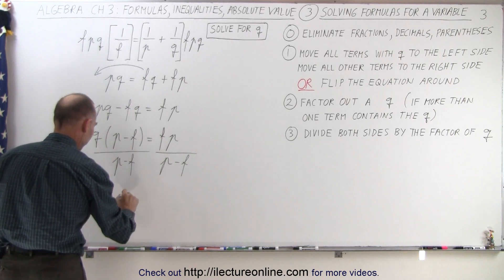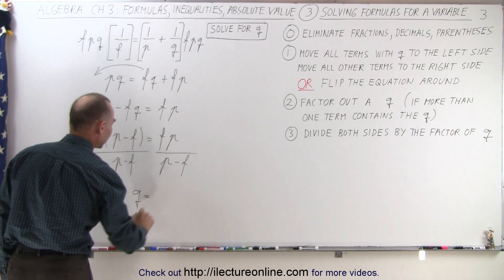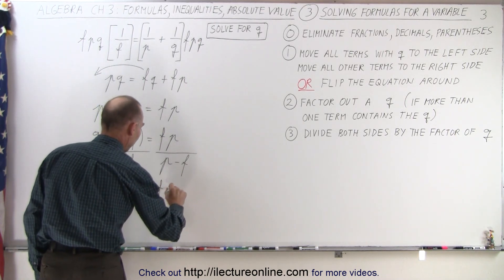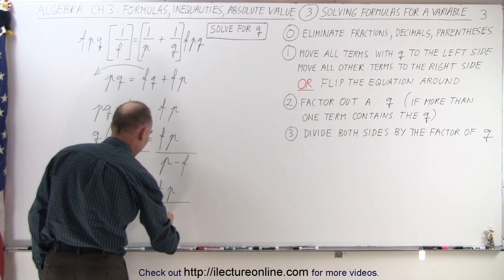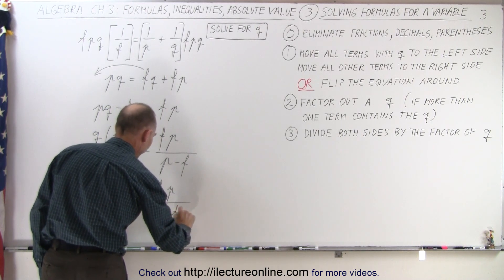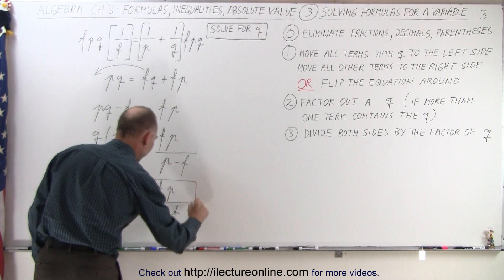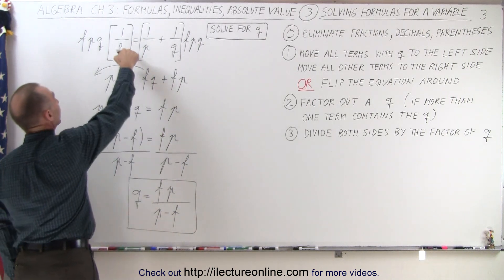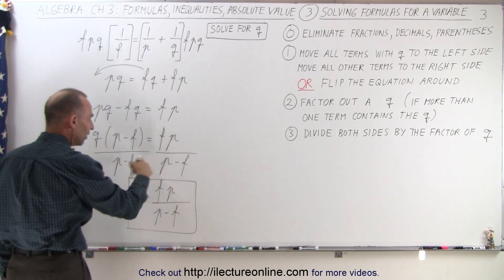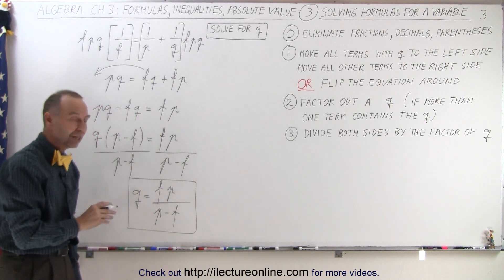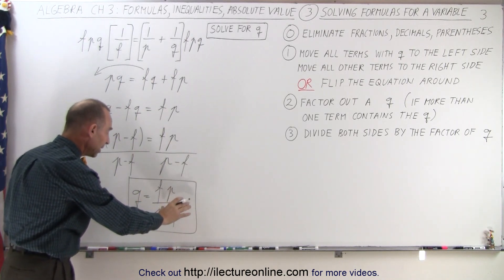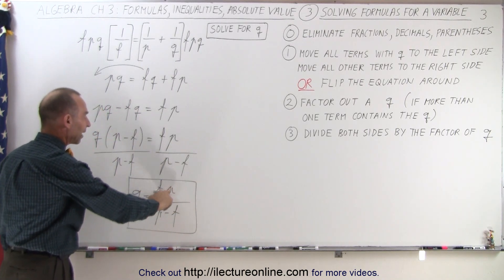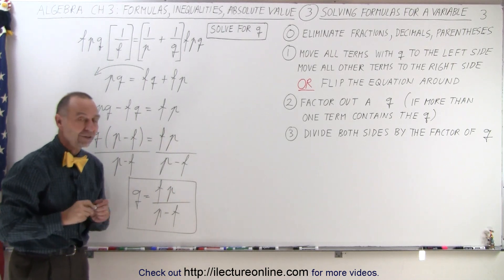So when that cancels out, we end up with Q on the left side is equal to F times P divided by P minus F. And this is then the very same formula as right over here, except it is now solved for Q. So everything is in terms of F and P, and Q equals F times P divided by P minus F.